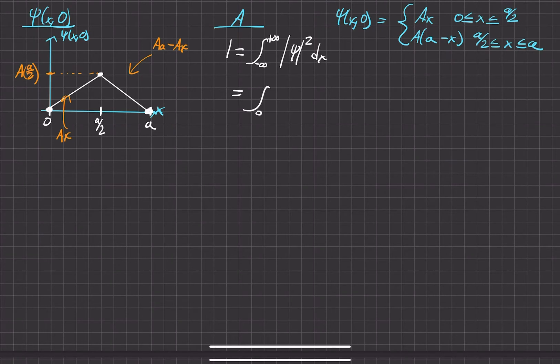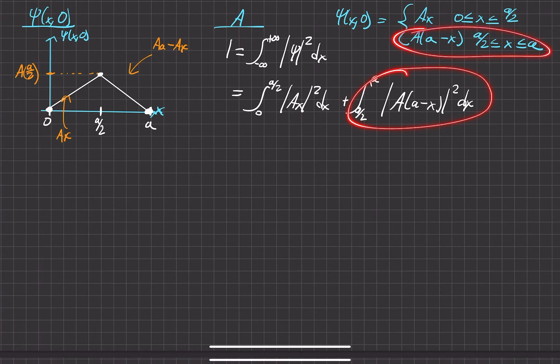So the first piecewise function goes from zero to a over two magnitude squared of the wave function within there. So that's just a times x in respect to dx and then plus our other portion that ranges from a over two to a, magnitude squared of that wave function, which is a times little a minus x in quantity squared in respect to dx. So this one corresponds to this piecewise function and this one to this one.